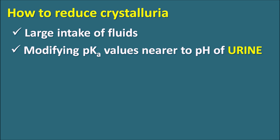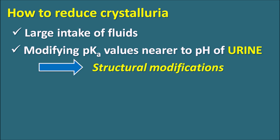The second approach is modifying the pKa value closer to the urinary pH. If the pKa of the drug is adjusted so that fewer crystals form in the urine, crystalluria is minimized. This modification of pKa can be achieved through structural modifications, which is one of the most important approaches to prevent crystalluria.